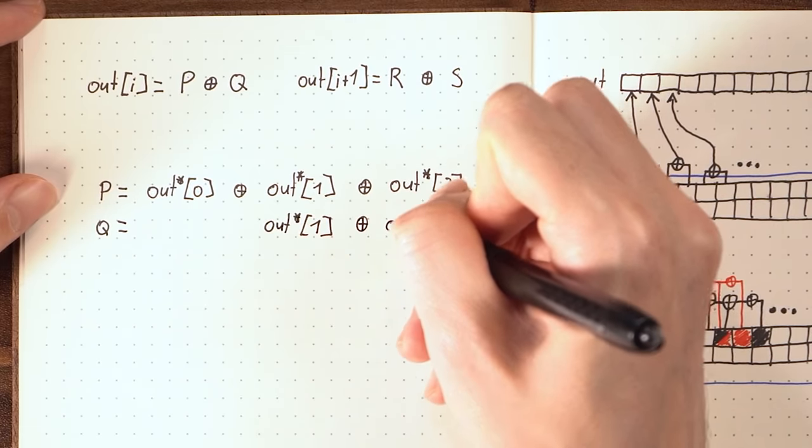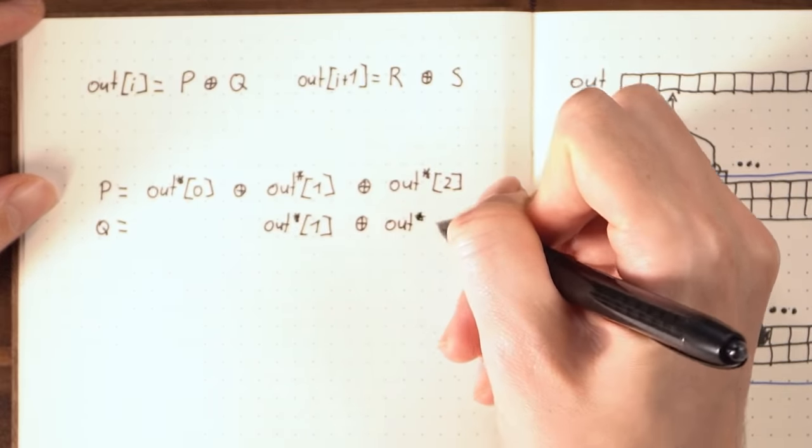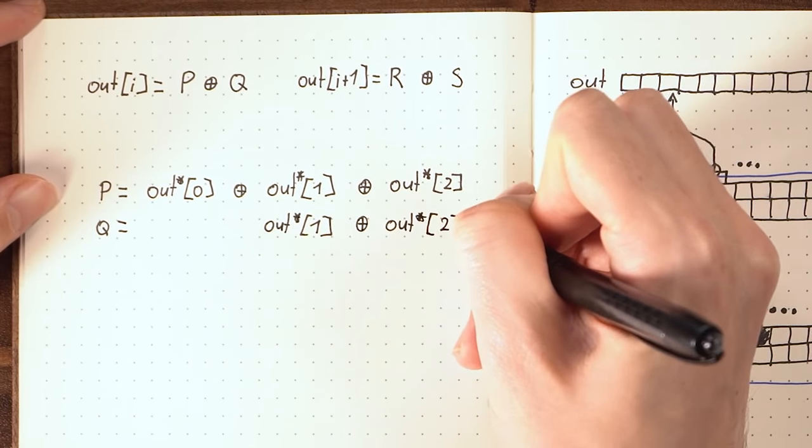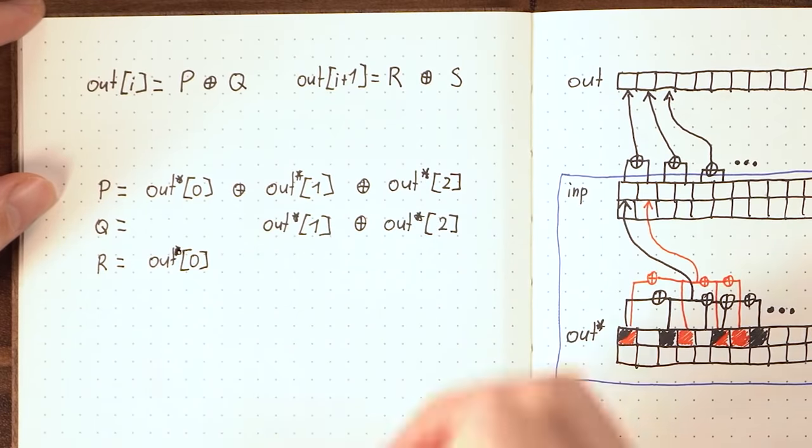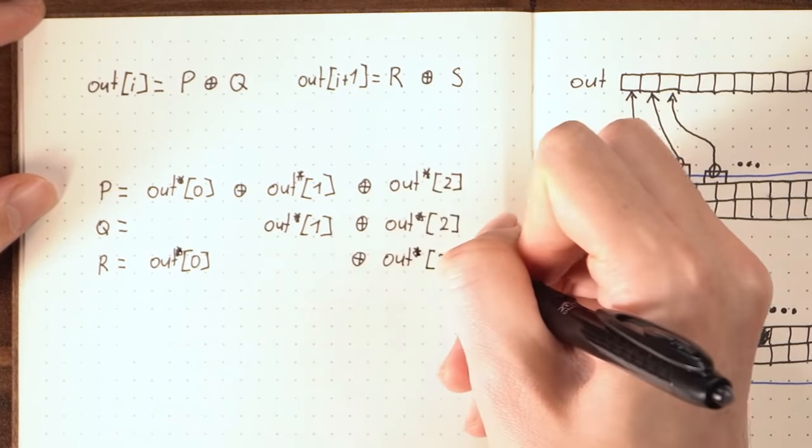And now Q has a different selection of OUT bytes. It might not include the first OUT byte, so maybe it's XORing the second and the third one. And now R could include the first OUT byte, but not the second, but include the third again.